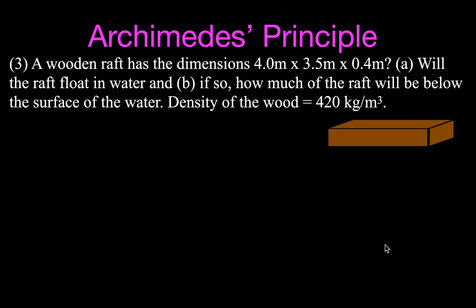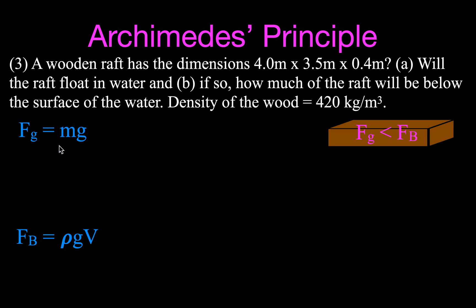For example number three, we have a wooden raft — the kind you might see at a lake. Its dimensions are 4 meters by 3.5 meters, with a height of 0.4 meters. We want to know: will it float, and how much will be below the surface? The density of the wood is 420 kilograms per cubic meter. We assume it is a solid piece of wood. For it to float, the weight must be less than the buoyant force.